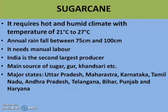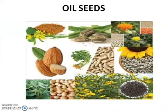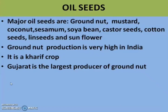Sugarcane is the main source of sugar, jaggery, gur, khandsari, etc. The next crop is oilseeds. In India, cooking doesn't happen without oil. The oilseeds produced in India include groundnut, sunflower, palm, coconut, mustard, soya bean, castor seeds, cotton seeds and linseed. Groundnut production is very high in India — it is a Kharif crop. Gujarat is the largest producer of groundnut, and it is also produced in Rajasthan and Tamil Nadu.